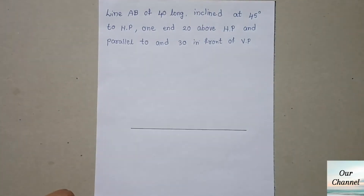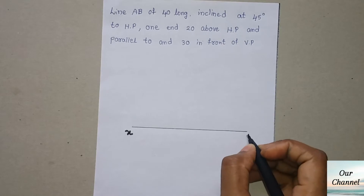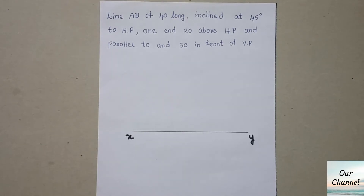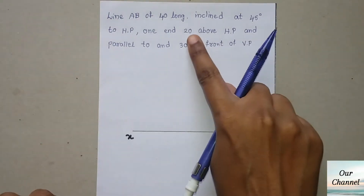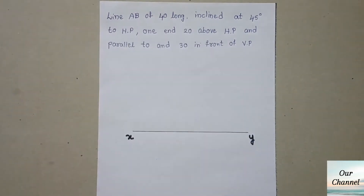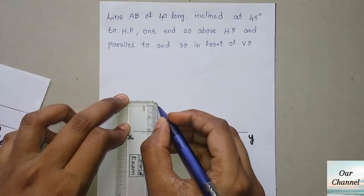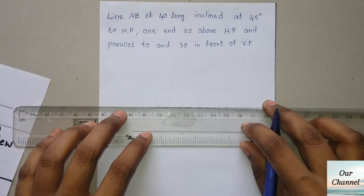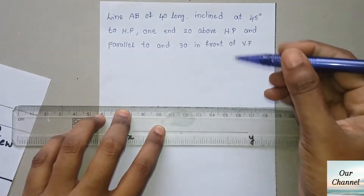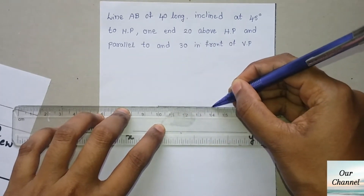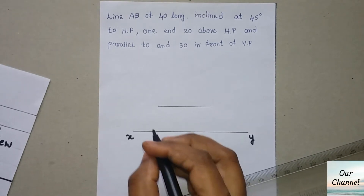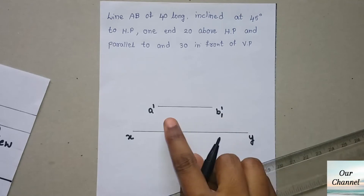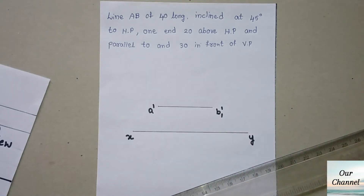First assume that the line is parallel to both the planes and draw the projections. The given line is 20 mm above HP, which means it will be above XY — as shown in the table from the previous video. Put a mark 20 mm above XY and draw the 40 mm line parallel to XY. This is the front view, so write a dash and label this side as b1 dash, because it is not the true length of the line — we have to draw the inclination also.